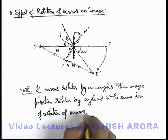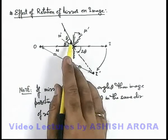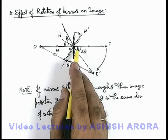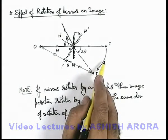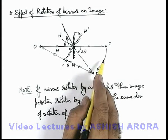Similarly, if mirror rotates by an angular speed omega in clockwise sense, the image will also rotate in clockwise sense with angular speed 2 omega.